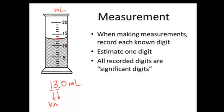Now these were known digits. These digits were known. This digit right here, I estimated. Okay, so we record each known digit, 1 and the 3. We estimate one digit, which I estimated the 0. And all of the numbers I've just recorded are called significant digits. We'll talk more about that.